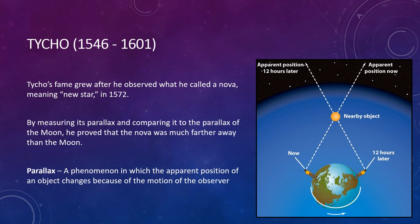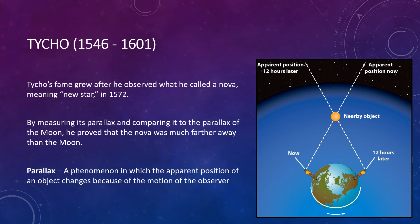Parallax is a phenomenon in which the apparent position of an object changes because of the motion of the observer. If we're on one side of the Earth and look at a nearby object compared to the background, it looks like it's in one position in the sky. But twelve hours later, when we're on the other side of the Earth, that same nearby object appears shifted to the left against the background stars. This apparent motion of an object because of us moving is known as parallax — it hasn't actually moved, we just have. You can test this by holding a finger close in front of your face and alternating between closing each eye — your finger appears to move back and forth relative to the background. That is an effect of parallax.